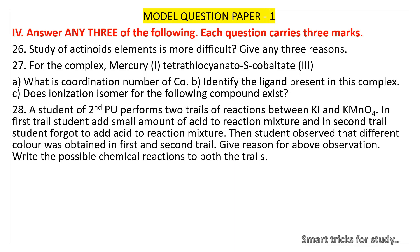28. A student of 2nd PU performs two trails of reactions between KI and KMnO4. In 1st trail, student adds small amount of acid to reaction mixture and in 2nd trail, student forgot to add acid to reaction mixture. Then student observed that different color was obtained in 1st and 2nd trail. Give reason for above observation. Write the possible chemical reactions to both the trails.